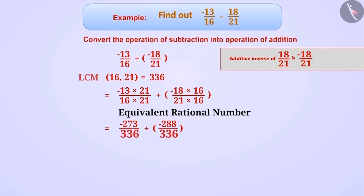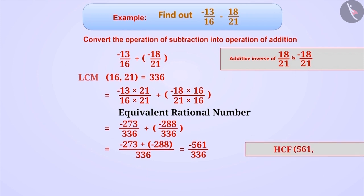Now, we add these two. Since the denominators are equal, we add the numerators and keep the denominators the same. This will give us the result minus 561/336. Here, HCF of the numerator and denominator is 3. So, we divide both by 3 and express it in its standard form, which is minus 187/112.